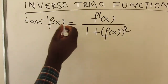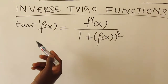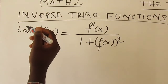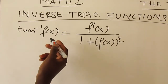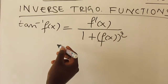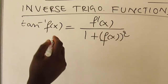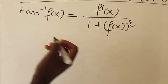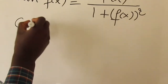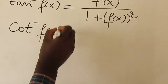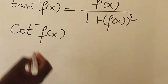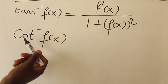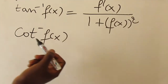These formulas — arc cos, arc sine, and arc tan — are always on your formula sheet. But there are some other formulas you won't find on the formula sheet. For instance, we have arc cot of f(x).